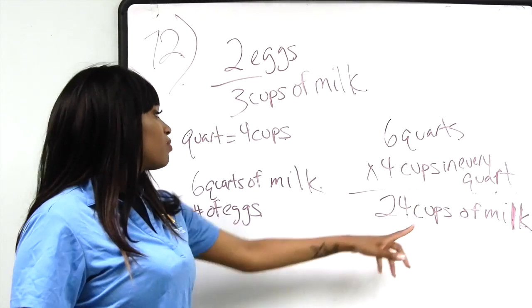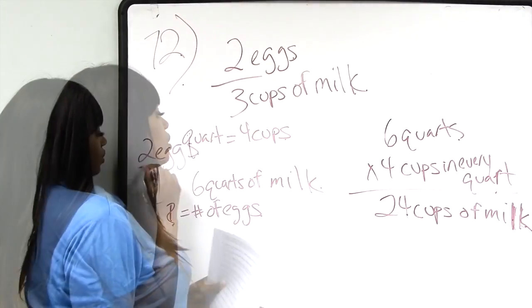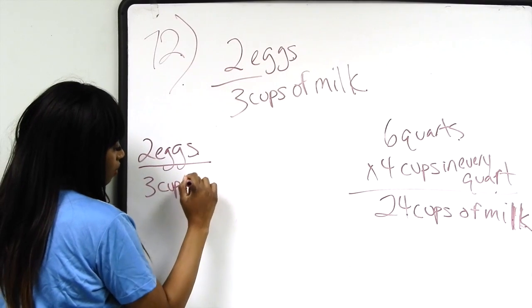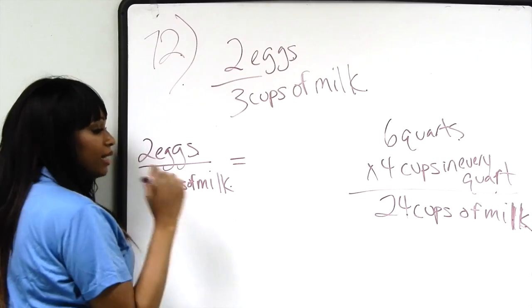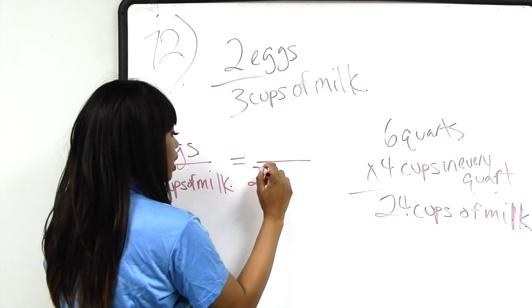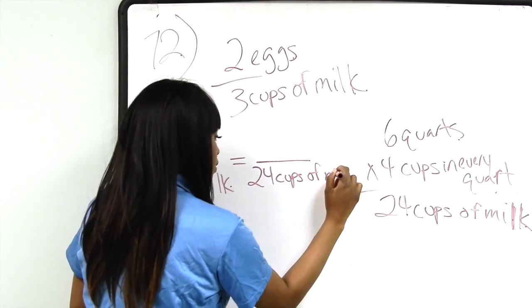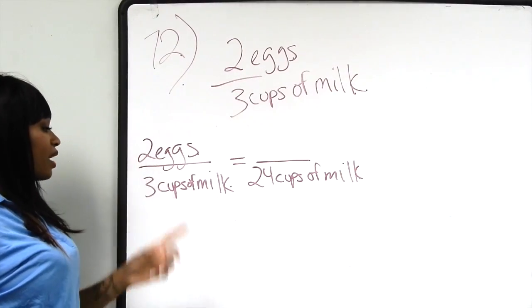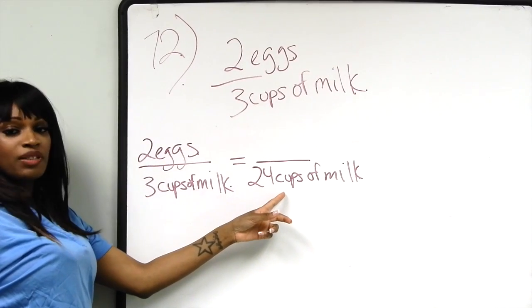We have 24 cups of milk and now we need to figure out how many eggs we need for 24 cups of milk. We set up a proportion: two eggs for every three cups of milk equals how many eggs for 24 cups of milk in the denominator.